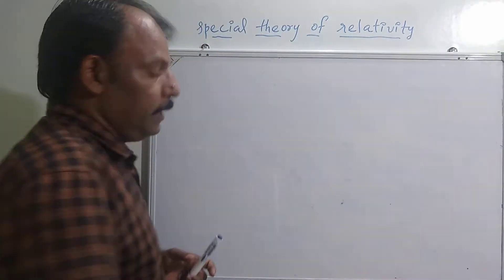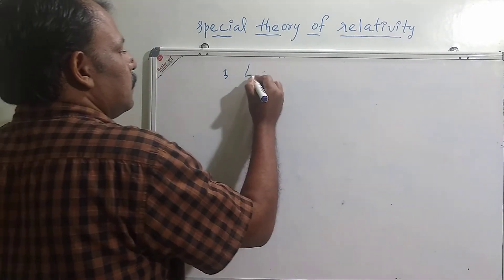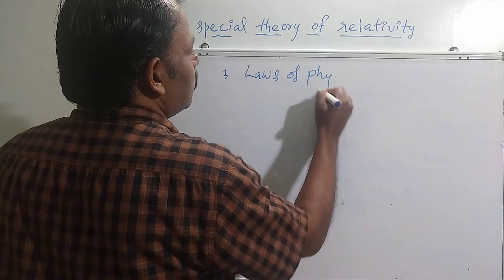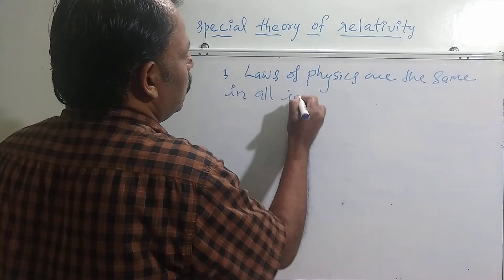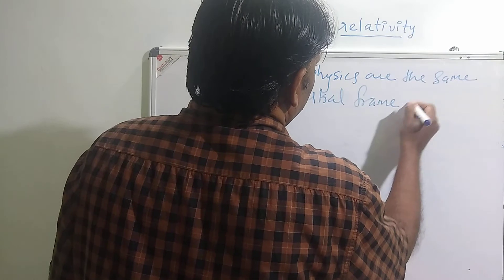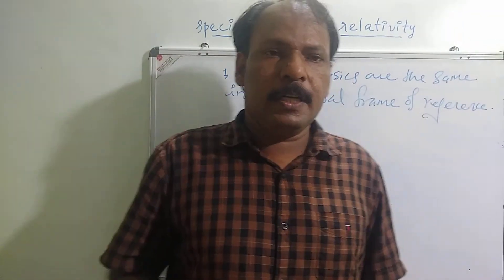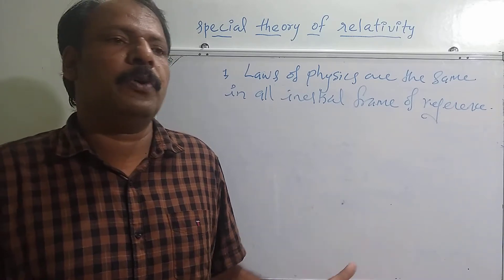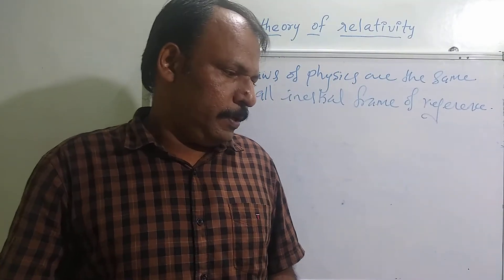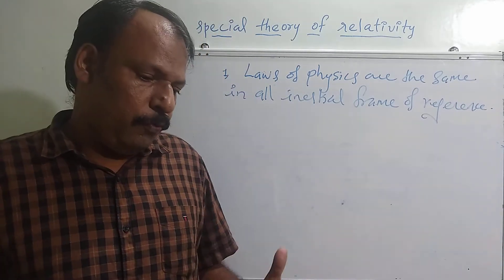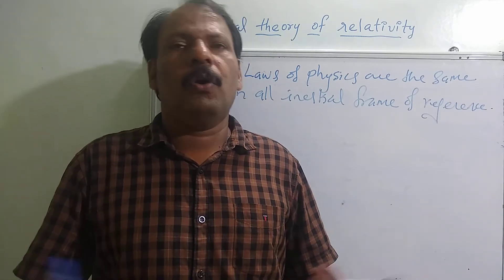In special theory of relativity, Einstein put forward two postulates. The first postulate is that the laws of physics are the same in all inertial frames of reference. When you transform the coordinates from one inertial frame of reference to another, the laws of physics must preserve the same form.